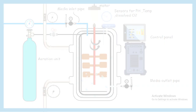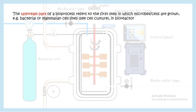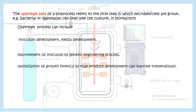The upstream process refers to the massive amplification of cells, generating the substance of interest in large amounts, though still in an unpurified state. Upstream processing includes inoculum development, media development, improvement of the inoculum by genetic engineering, and all initial molecular biology steps — ultimately optimizing growth kinetics to achieve a faster, cost-effective, and highly efficient production condition.